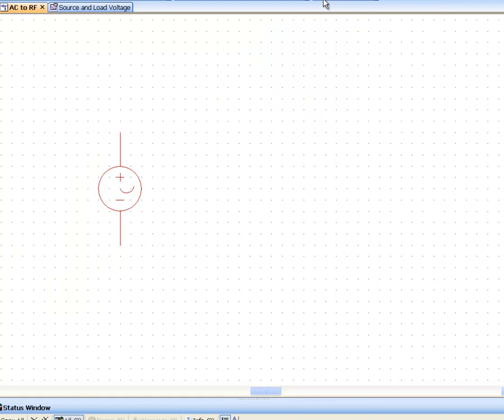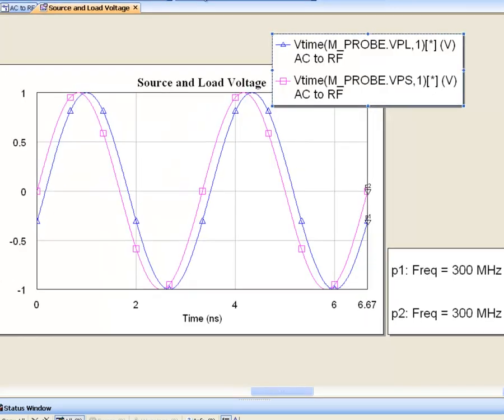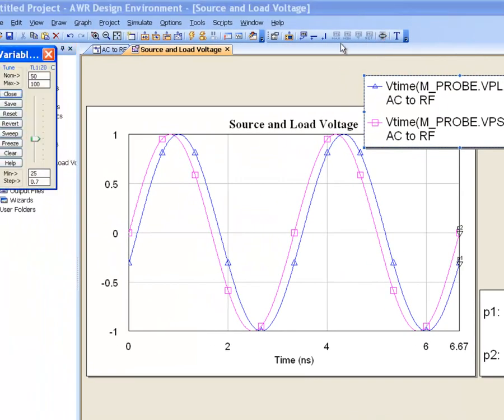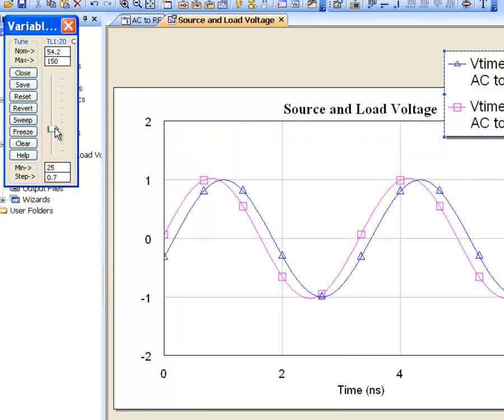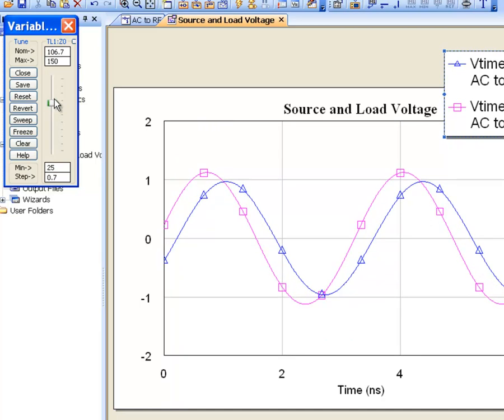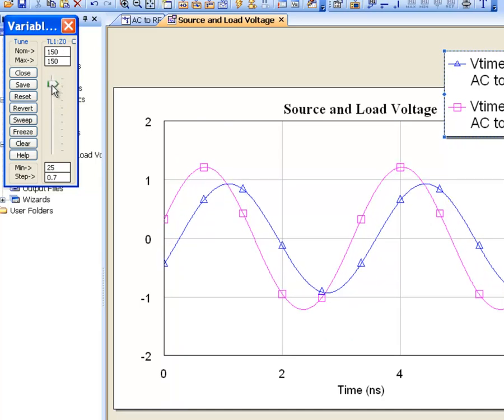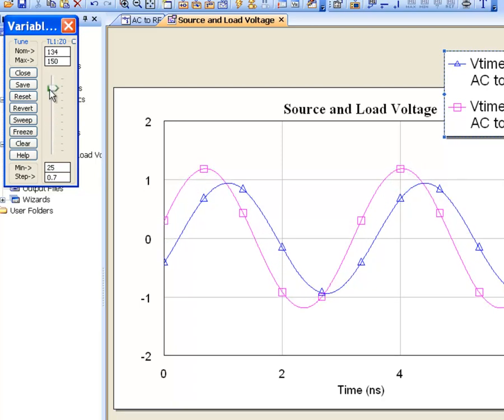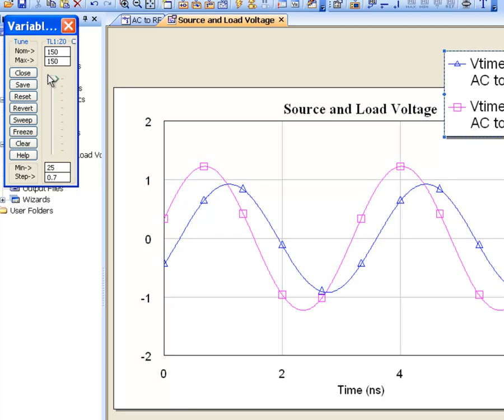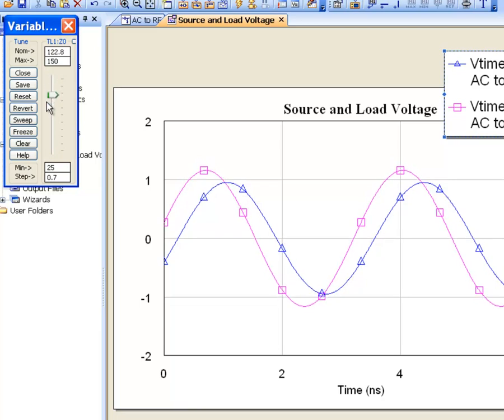Now what happens if we go back to our schematic and open the tuner and start tuning the impedance of our transmission line. Let's say that we tune the impedance between 25 and 150. Now you can see that the source and load voltage are becoming different. However, they're not changing by a massive deal. You're losing a bit of power but not a great deal.